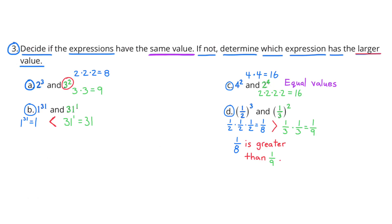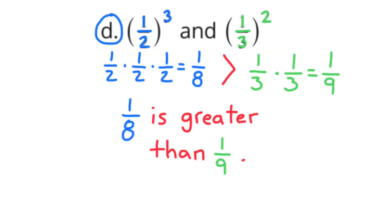Part d: 1 half to the power of 3 and 1 third to the power of 2. 1 half to the power of 3 is 1 half times 1 half times 1 half, which equals 1 eighth. 1 third to the second power is 1 third times 1 third, which is 1 ninth. And 1 eighth is larger than 1 ninth.